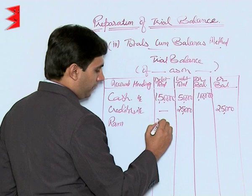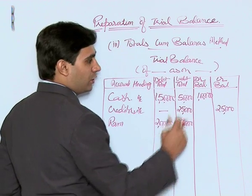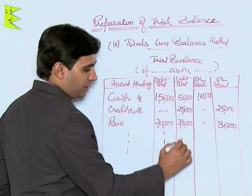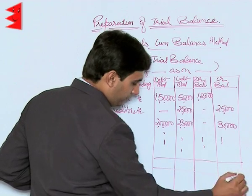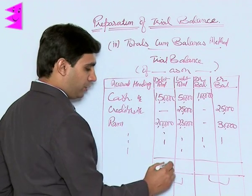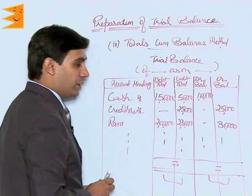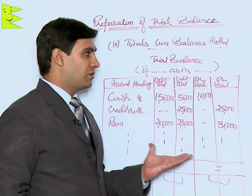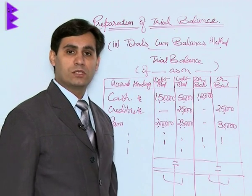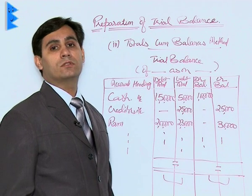Taking another example — Ram, a customer — has a debit total of two lakh and a credit total of two lakh thirty thousand. Since the credit total is higher, there is a credit balance of thirty thousand. Once all accounts are entered, the totals of both columns should tally: debit totals equal credit totals, and total debit balances equal total credit balances. This third method is a mixture of the totals method and the balances method, but remember the most widely used method is the balances method.